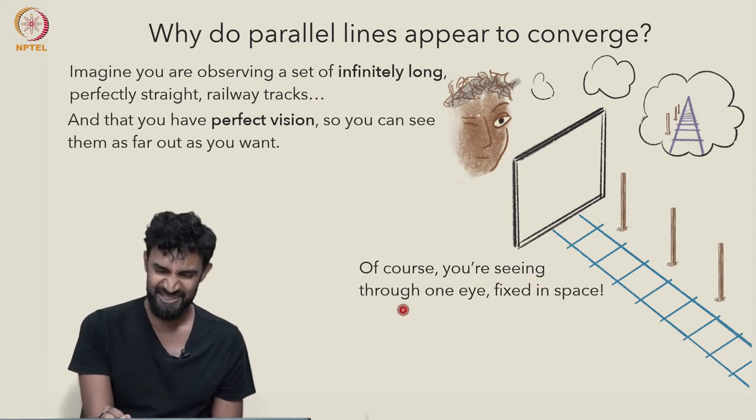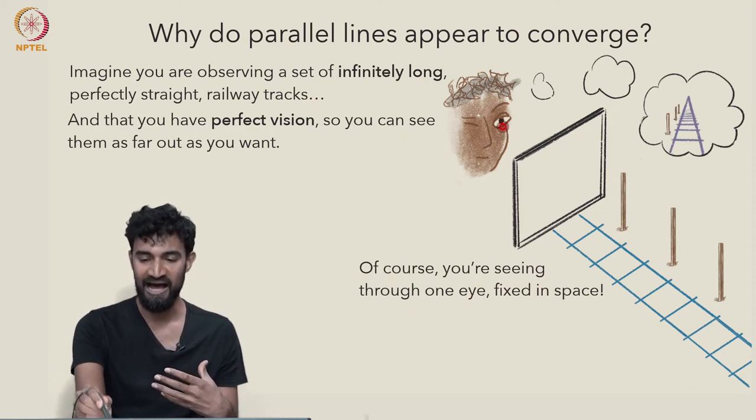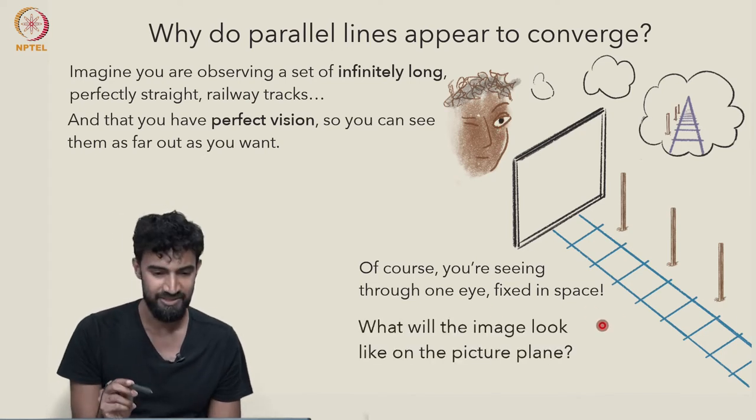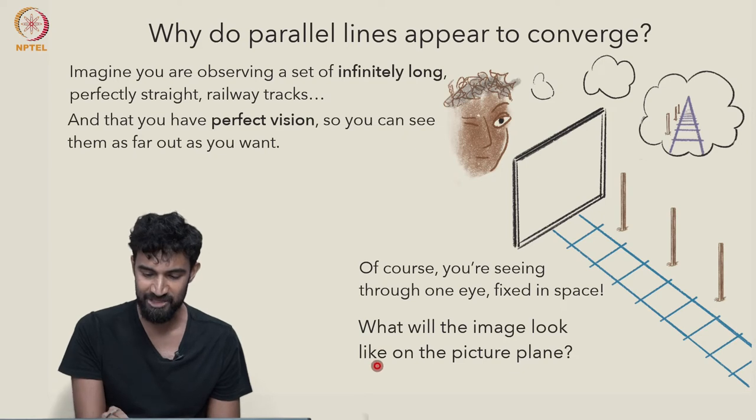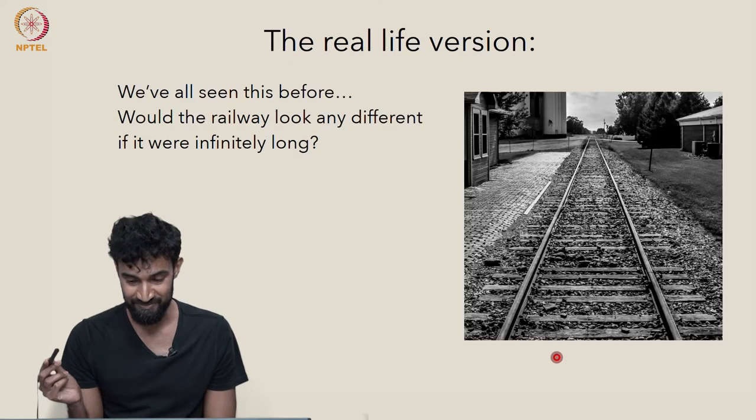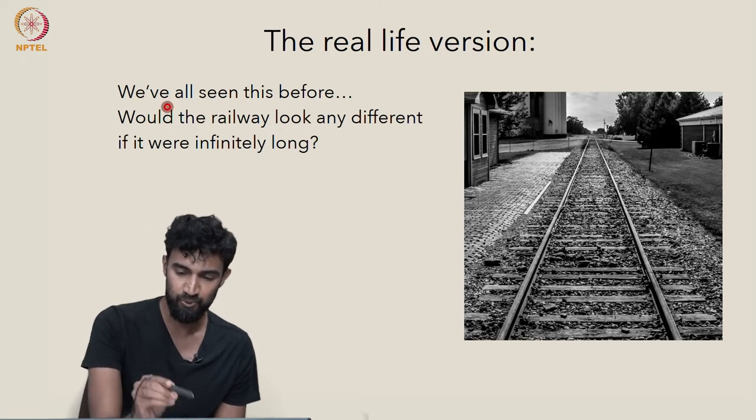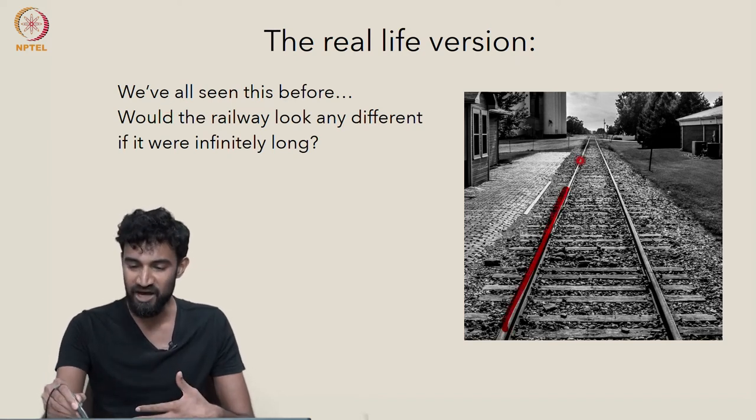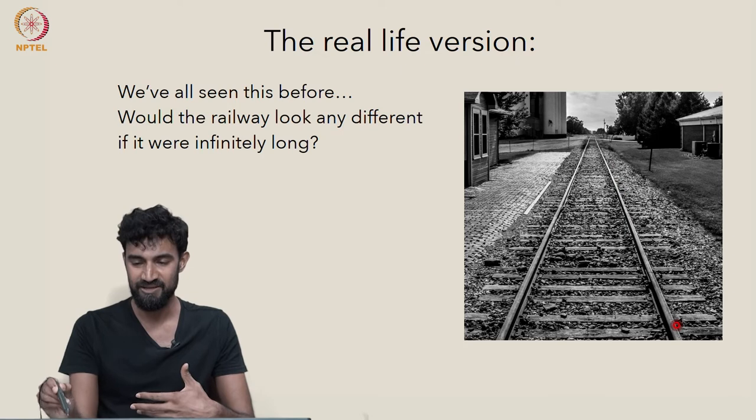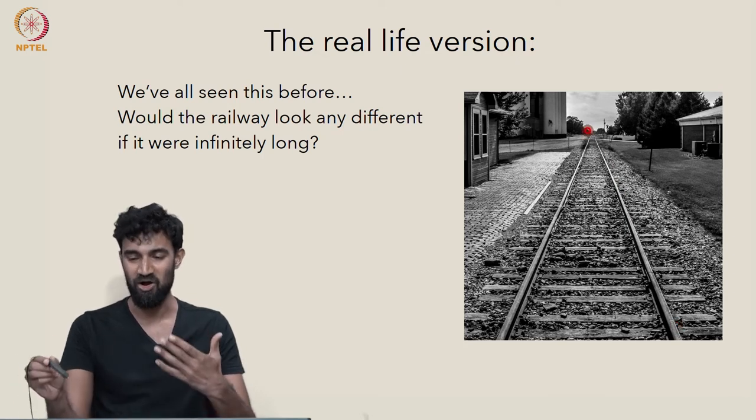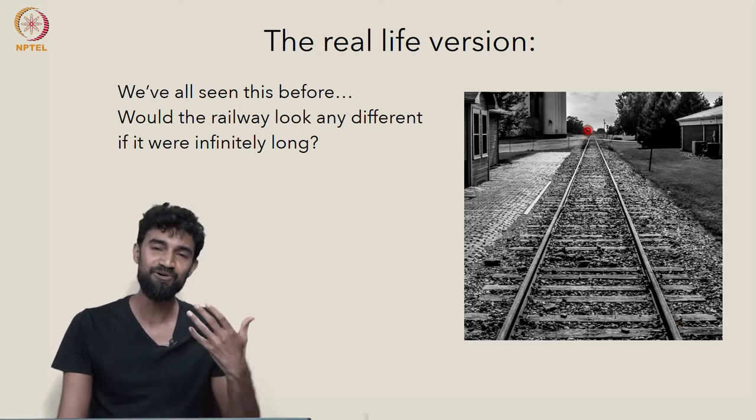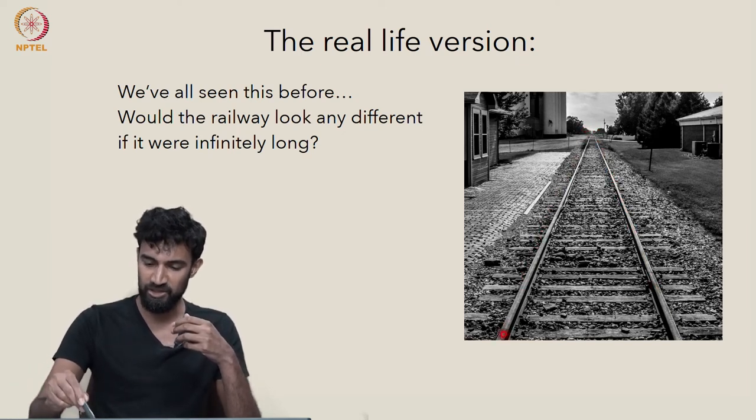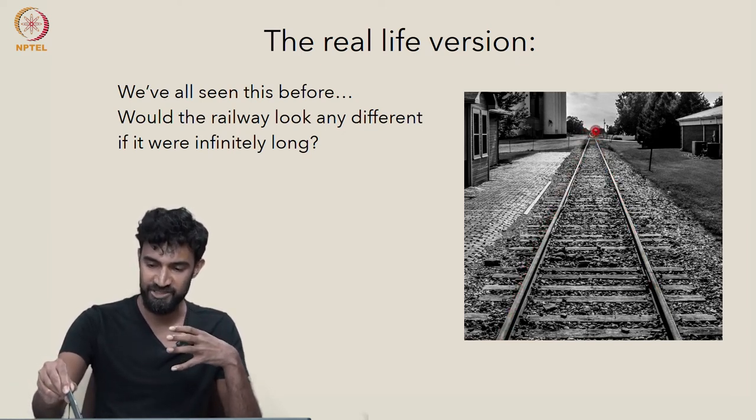And of course, you're seeing all this with one eye in a fixed location. The other eye is closed. So what will the image look like on the picture plane? The real life version is something we've all seen before. These are not infinitely long tracks, they're finitely long, but they're very long. And given our imperfect vision, we can't really tell the difference. They'll go out and out and out and appear to converge somewhere.